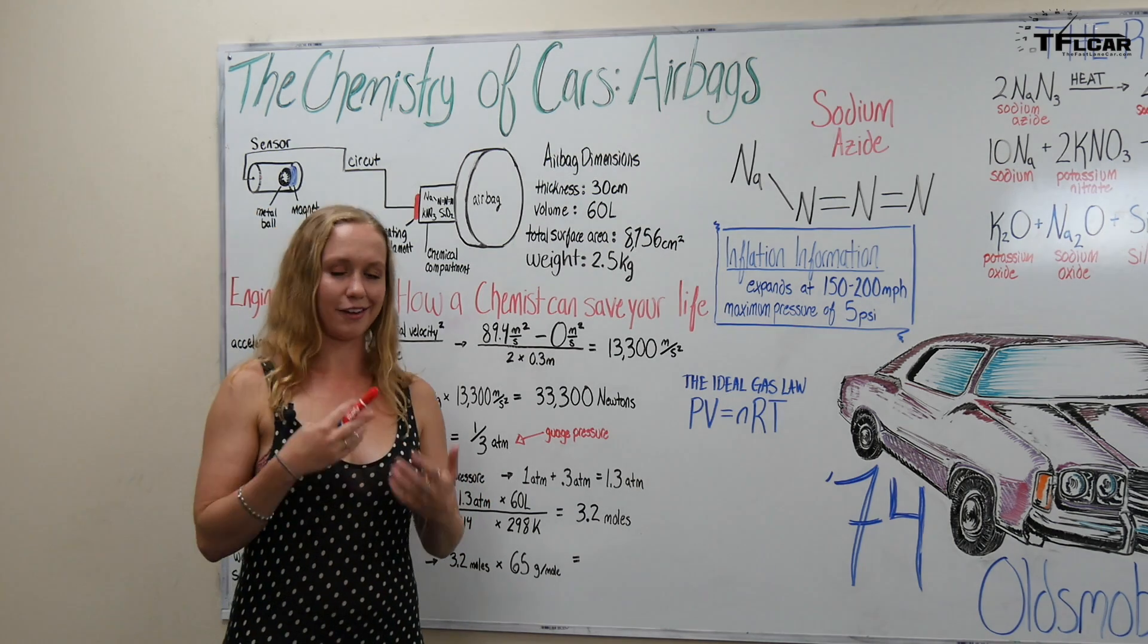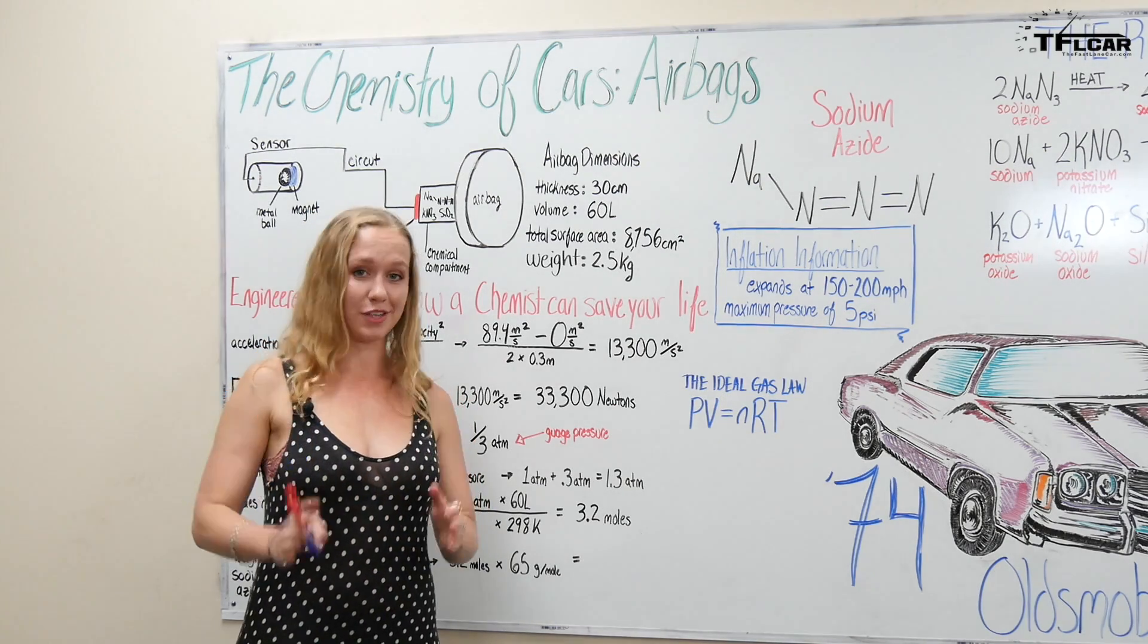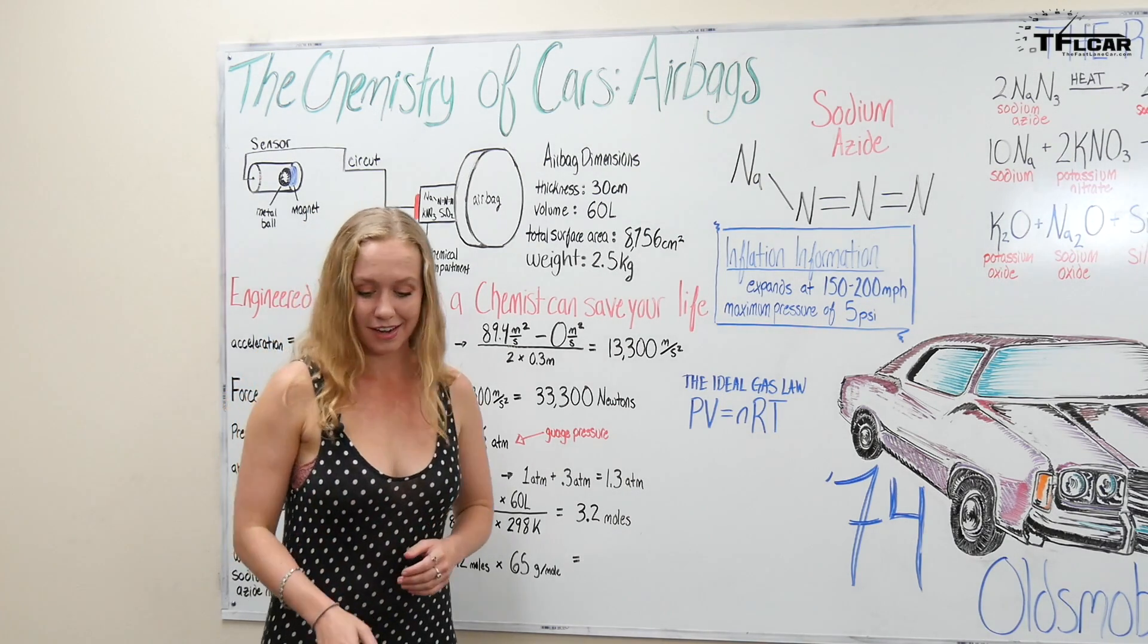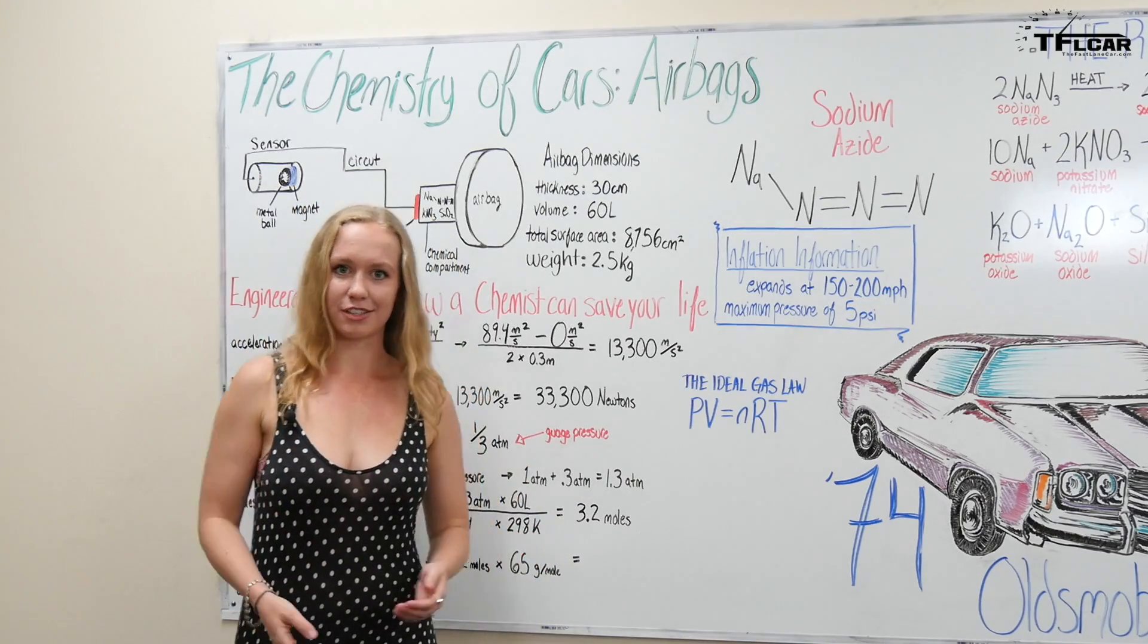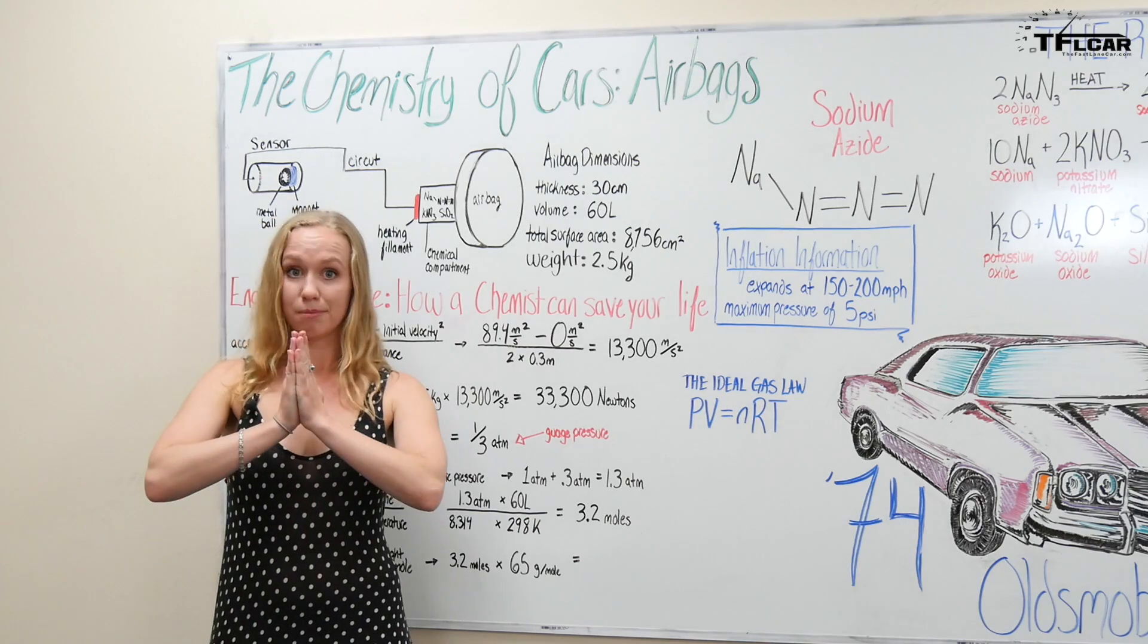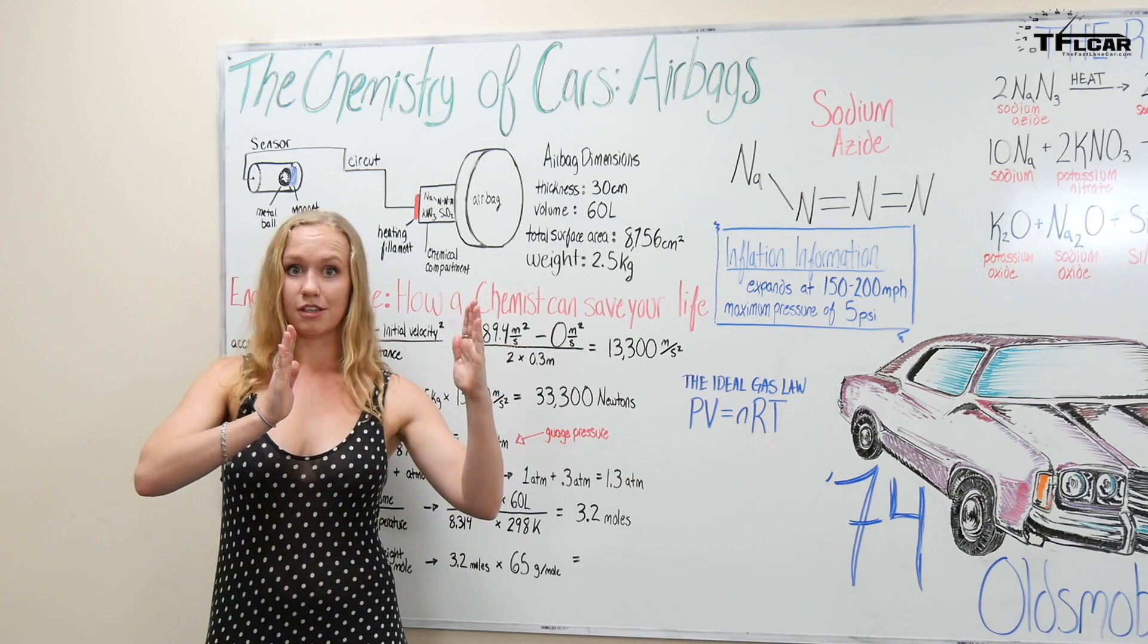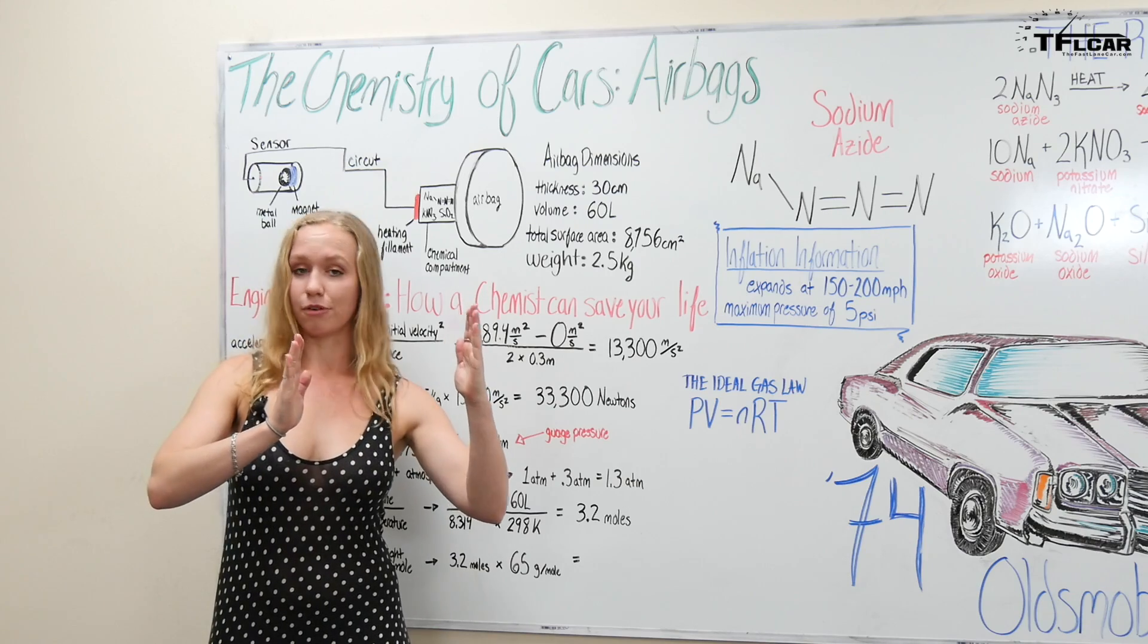The first thing you're going to want to figure out when doing the simple mechanical analysis is how fast you need the airbag to inflate. Now the way that you do that is just through a simple approximation. Say you have this cylinder here and it starts compressed as such and then it grows 30 centimeters to come meet the driver's space before impact.